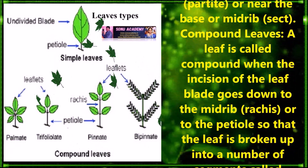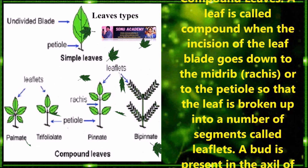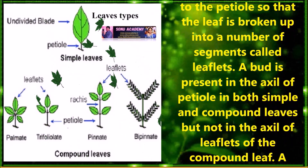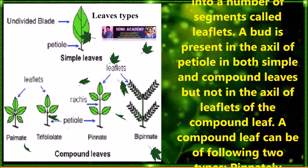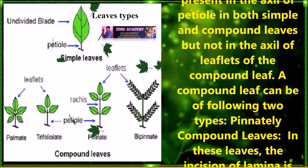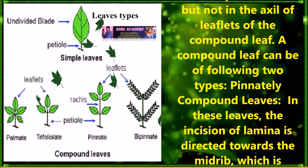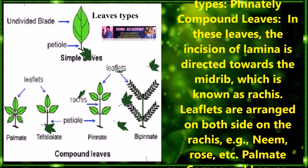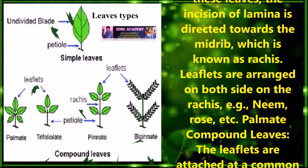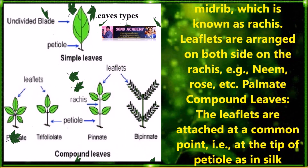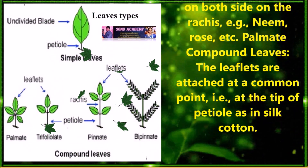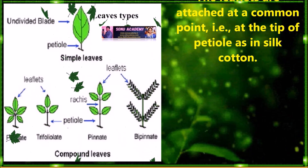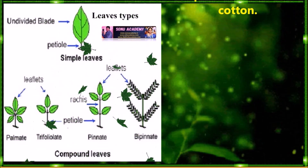Compound leaves: a leaf is called compound when the incisions of the leaf blade go down to the midrib or to the petiole so that the leaf is broken up into a number of segments called leaflets. A bud is present in the axil of the petiole in both simple and compound leaves, but not in the axil of leaflets of the compound leaf. A compound leaf can be of two types: pinnately compound leaf, where the incisions of the lamina are directed towards the midrib known as the rachis, with leaflets arranged on both sides of the rachis — examples: neem, rose, etc. — and palmate compound leaves, where the leaflets are attached at a common point at the tip of the petiole, as in silk cotton.